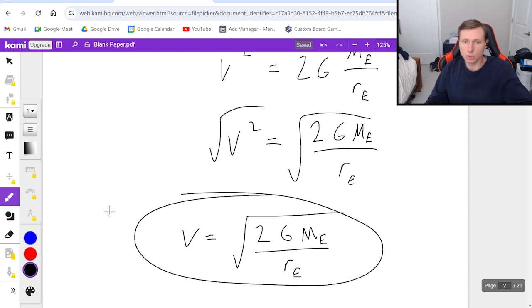And the cool thing is, too, you can now find the escape velocity of any planet, assuming you know its mass and its radius, because the equation is still the same.